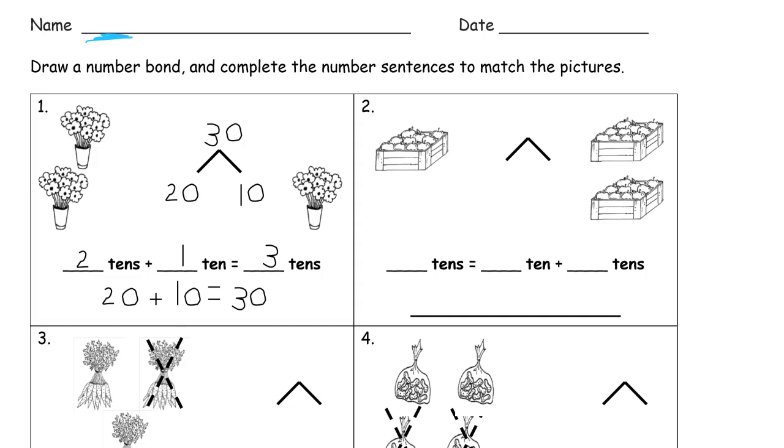Directions are to draw a number bond and complete the number sentences to match the pictures. The first one is already done as an example, so here's what we had to write. You can see the pictures of the three flowerpots here, and each one is a group of ten flowers. So over here, there's two tens. That's 10, 20, so that's the 20 right there. And here's just one 10. So 20, those two together, if you count them all, 10, 20, 30, they're going to count to 30.